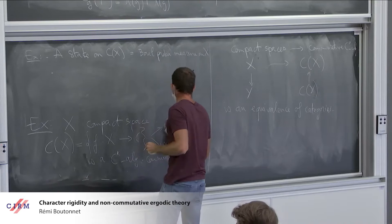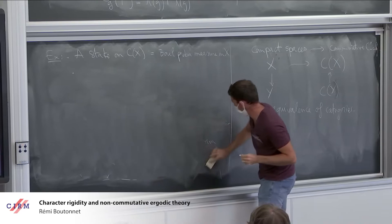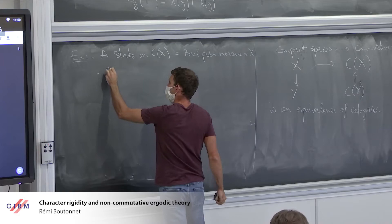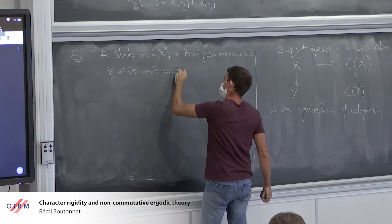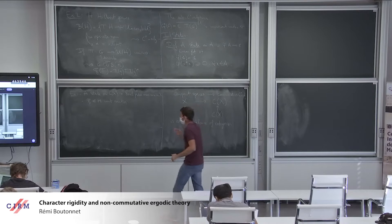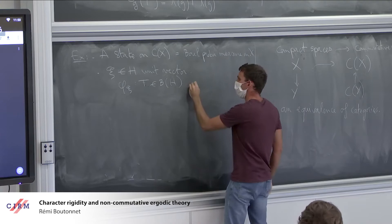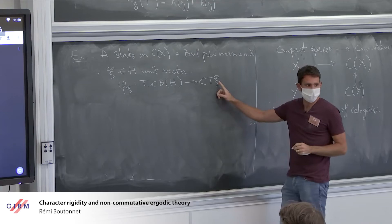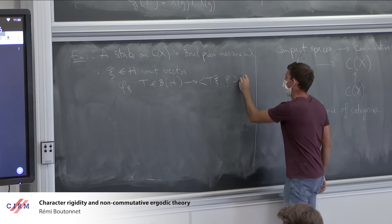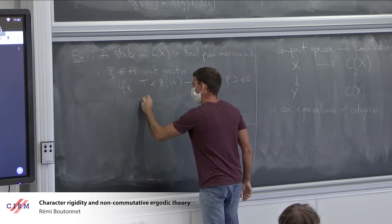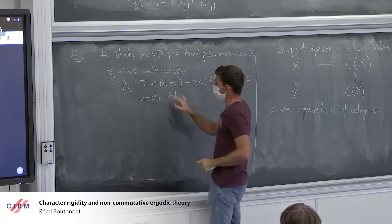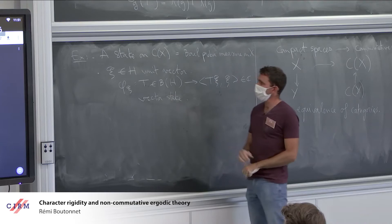The second example: on B(H), if you take a unit vector Xi, you get a vector state on B(H). Taking an operator T, you evaluate T at the vector Xi and look at the Xi coordinate — this is a vector state. It's not true that every state on B(H) is of this form, but they are interesting states. Of course, if I have a state on B(H), I can restrict it to a state on any sub-C*-algebra.